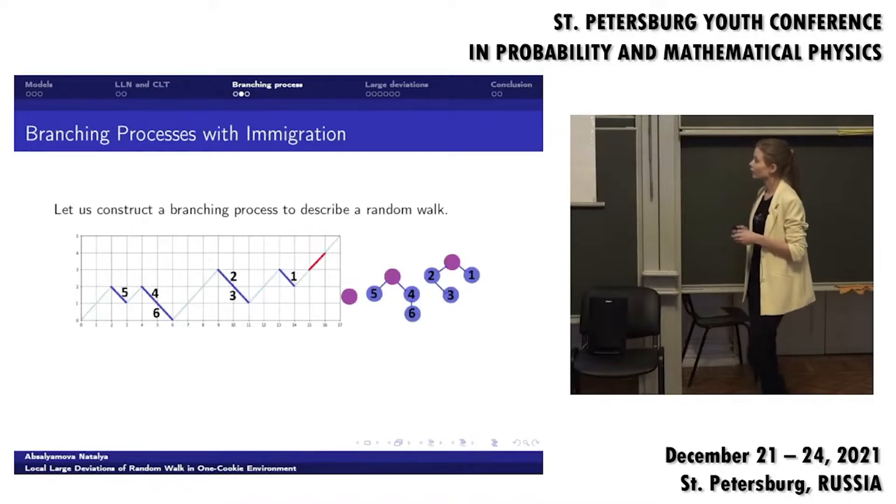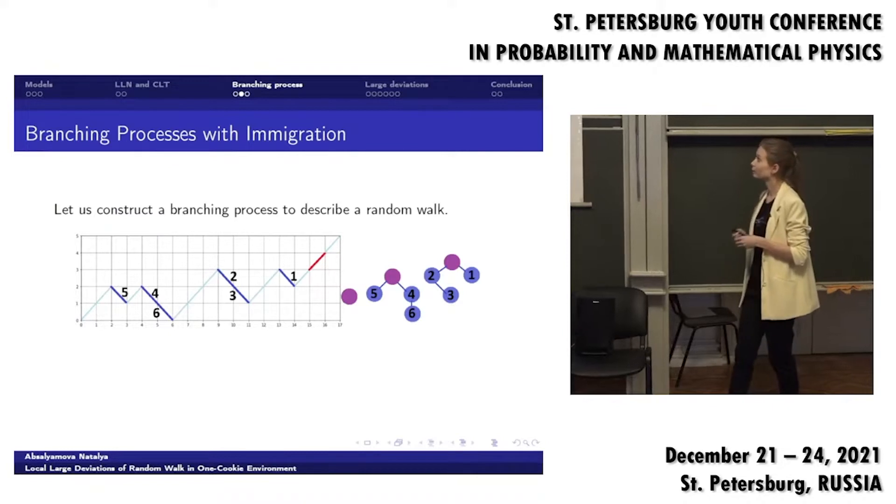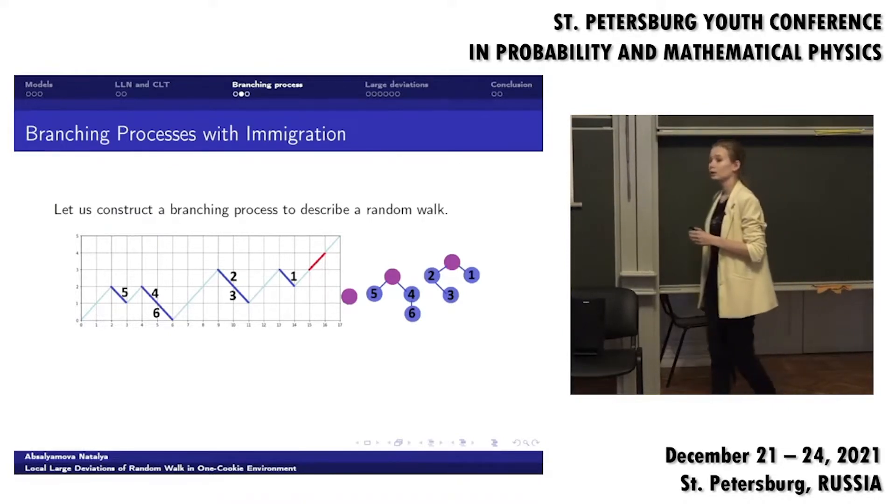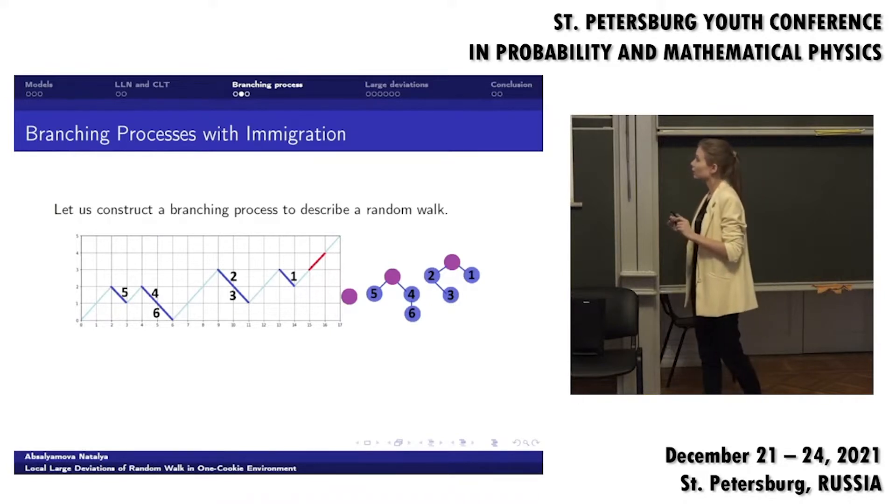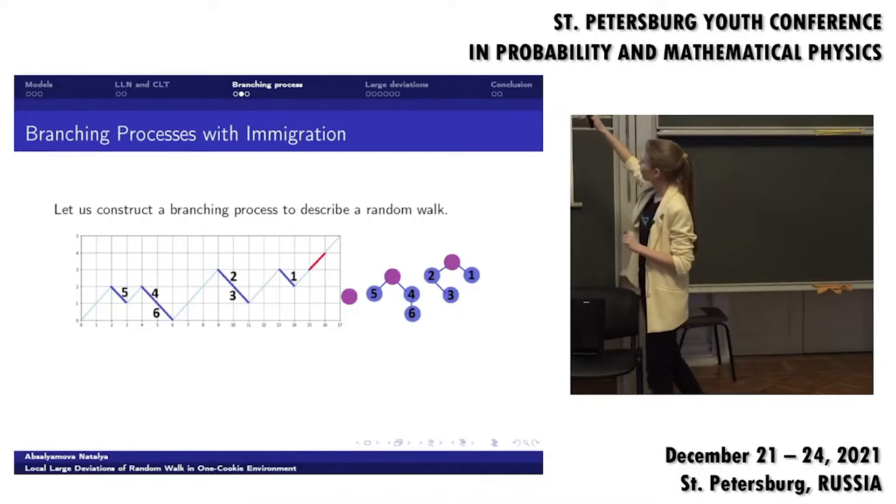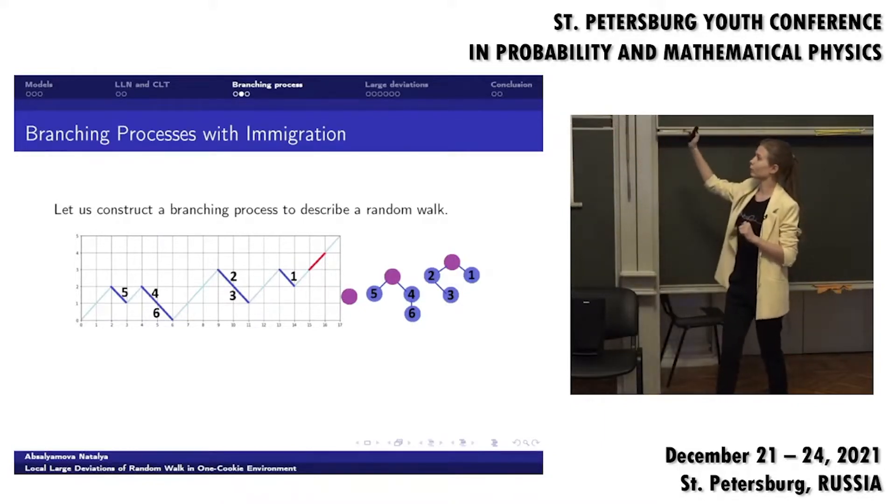And now let's construct a branching process. Start with summer generation. Starting with summer generation moment we have one particle. I will call it a migrant. Then here it is level one to level three. On level three we have one migrant. Then we look at the steps which go to the left on the line from point three to point two. We can see that there are two steps and it will be the descendants of our first migrant: particle one and particle two.